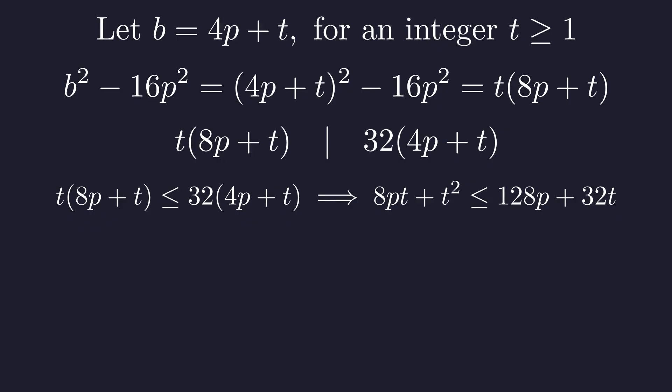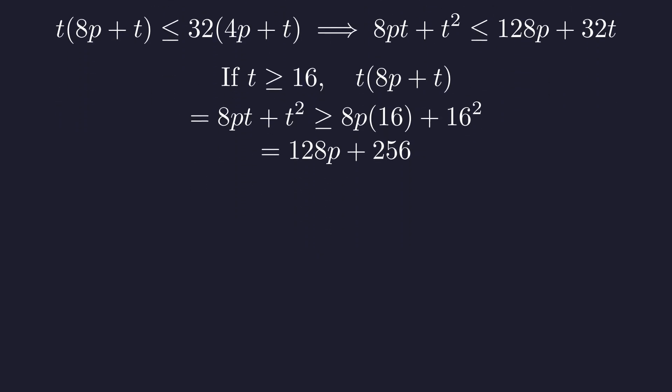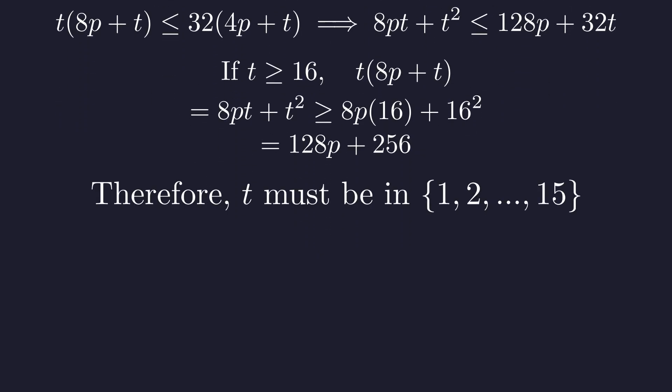Now let's see what happens when t gets large, say 16 or bigger. When t is 16 or bigger, the left side becomes at least 128p plus 256, but that's way bigger than what it's supposed to divide, which creates a contradiction.